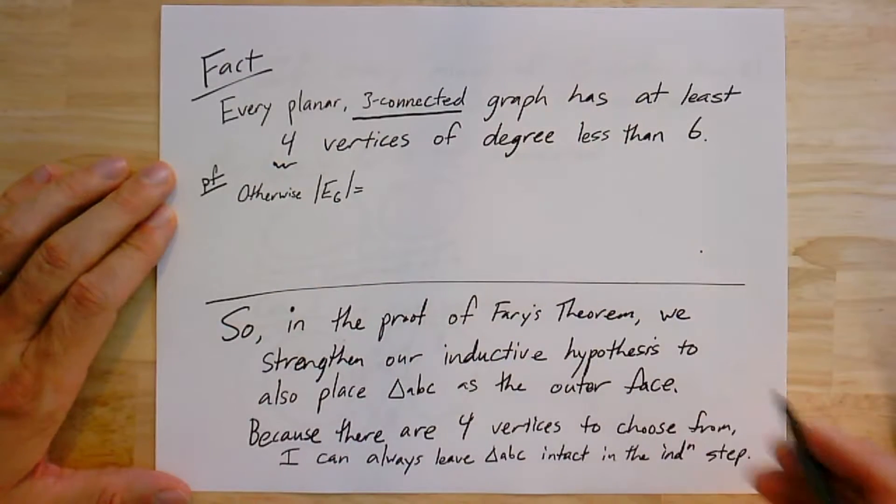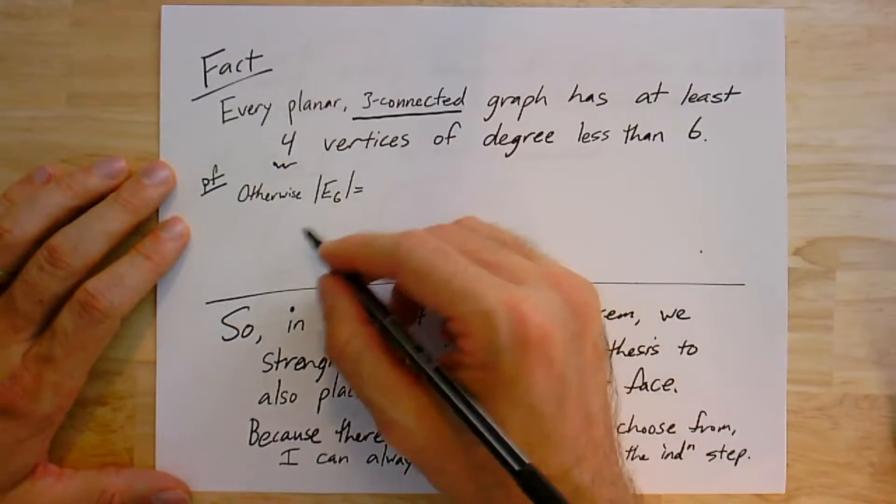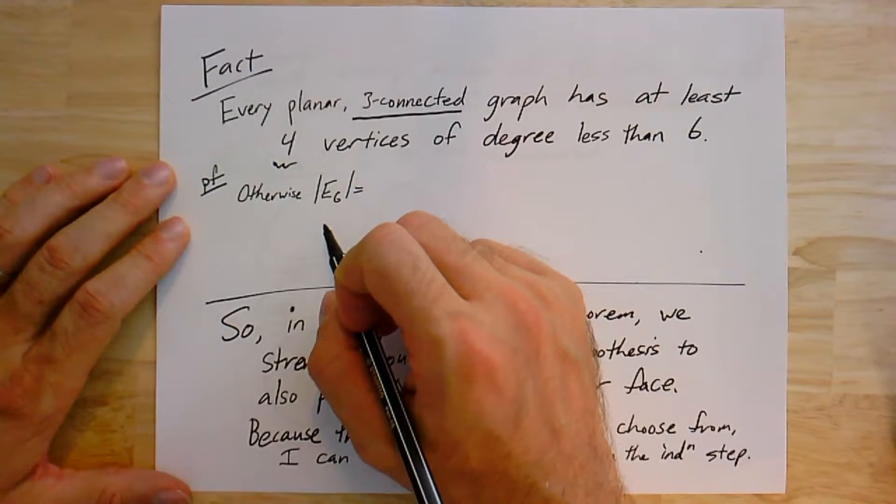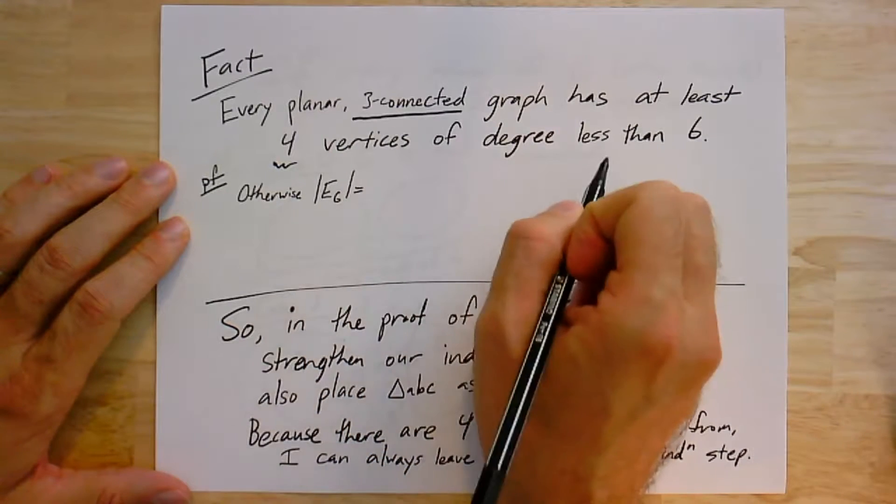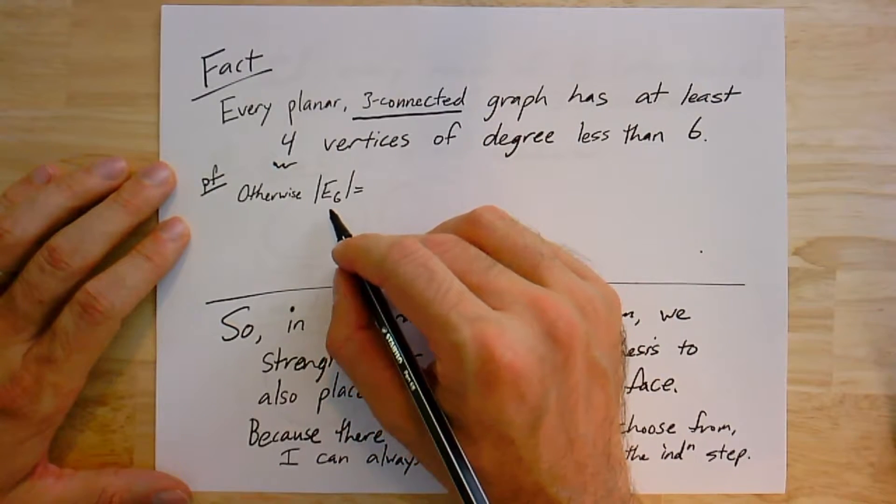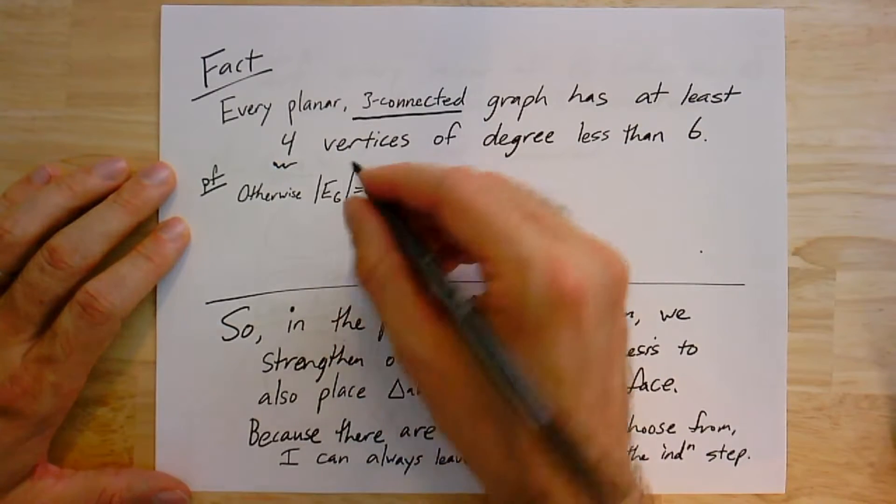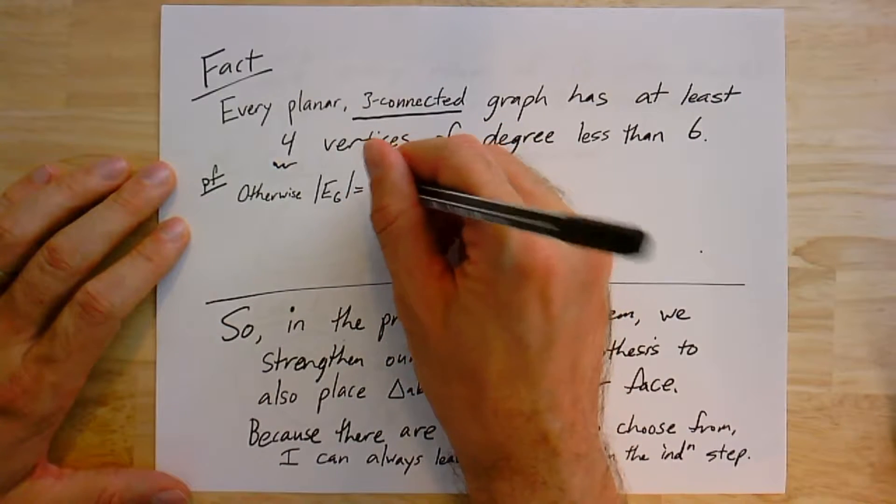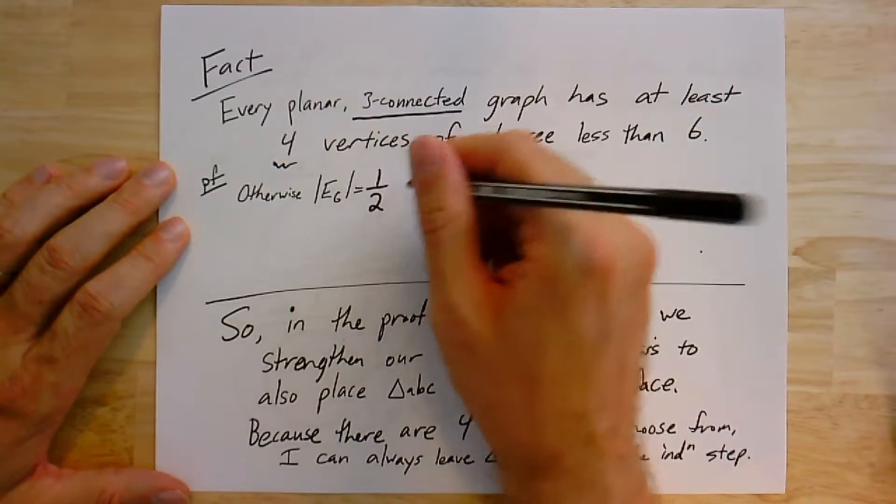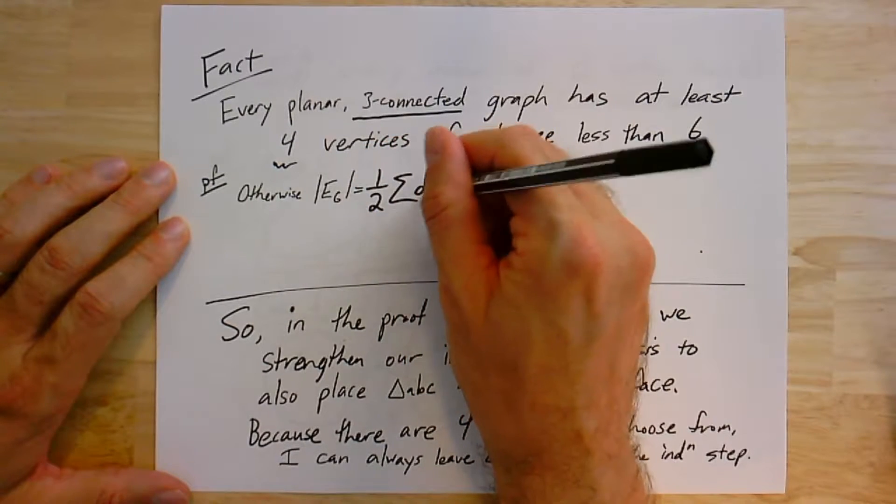Here you'll notice there's a slightly different hypothesis. If it's planar and 3-connected, which is the case we're dealing with, it means that there's not just one vertex of degree less than 6, but there are at least four that I could have chosen from. This is going to give me options when it's time to do induction.